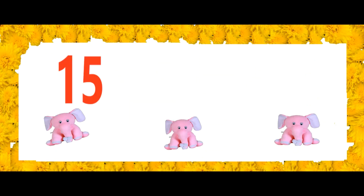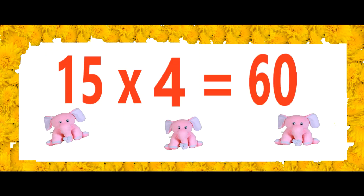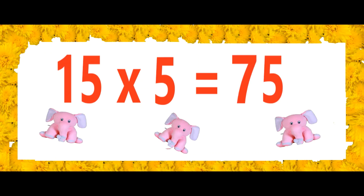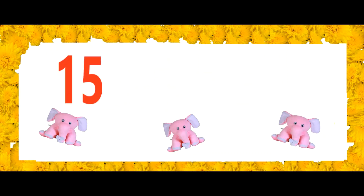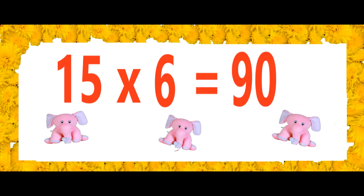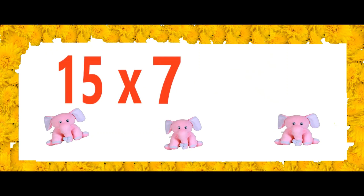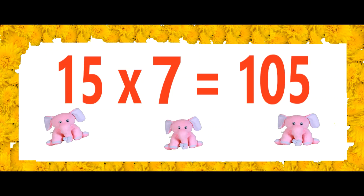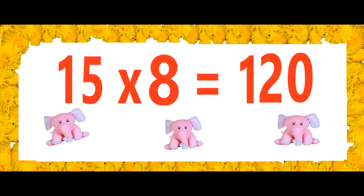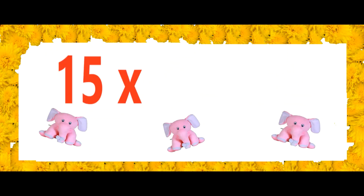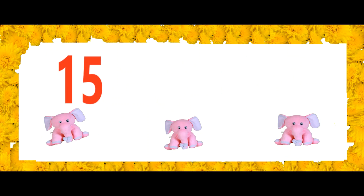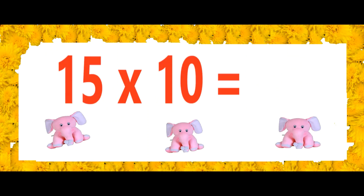Fifteen fours are sixty. Fifteen fives are seventy-five. Fifteen sixes are ninety. Fifteen sevens are one hundred and five. Fifteen eights are one hundred and twenty. Fifteen nines are one hundred and thirty-five. Fifteen tens are one hundred and fifty.